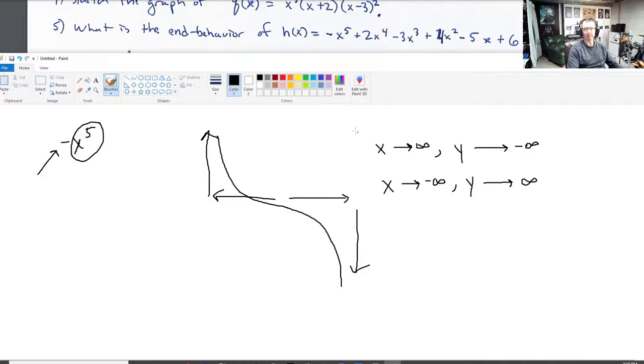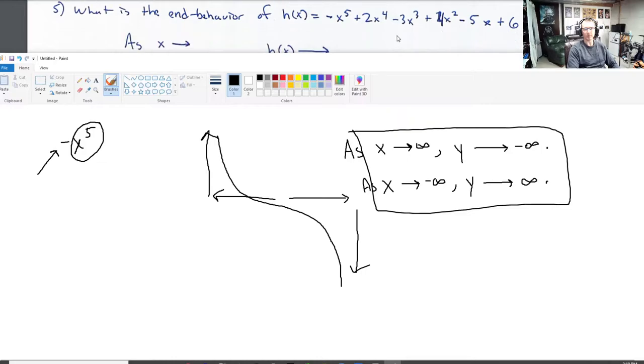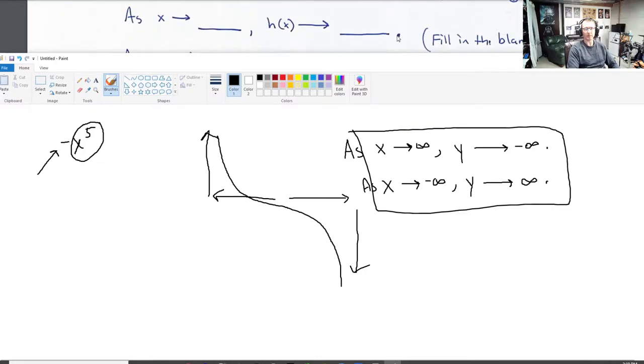So there you have it. This is the end behavior. You can make these complete sentences by saying as x goes to infinity, y goes to negative infinity, period. As x goes to negative infinity, y goes to positive infinity. Period. Complete sentences, right? And that's all I gave you here. Okay.